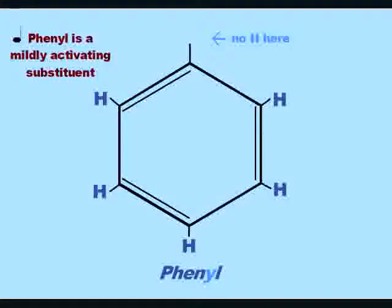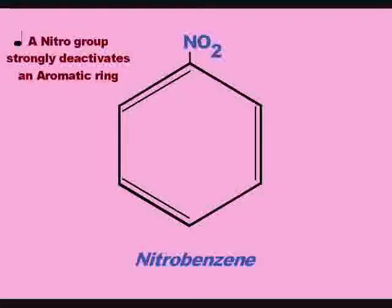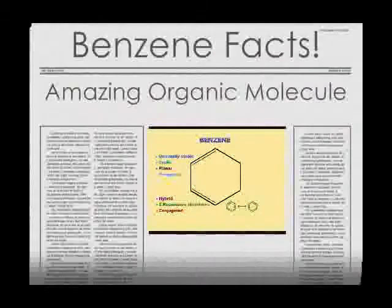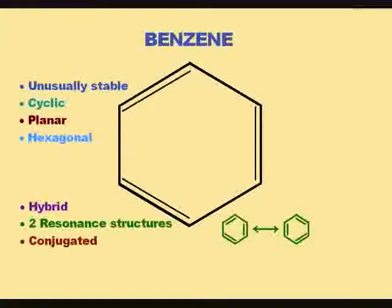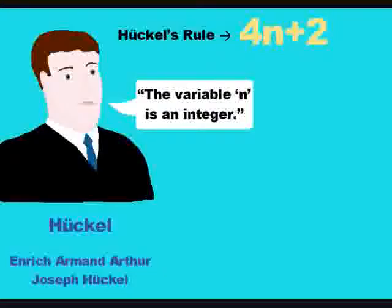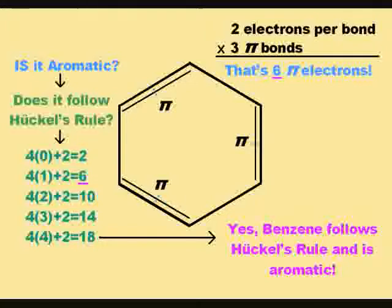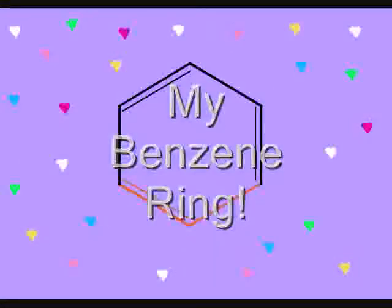Add O-H for phenol. Phenyl's missing an H. HNO2 makes nitrobenzene. Benzene is unusually stable — it's cyclic, planar, and hexagonal, a hybrid with two resonance structures. Of course it's conjugated. Hückel gave us 4n+2. He said in his integers that you choose, so just count up all the pi electrons. Two, six, ten are aromatic, just like my benzene ring!